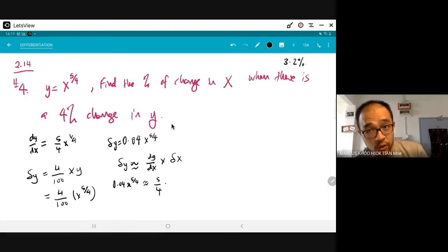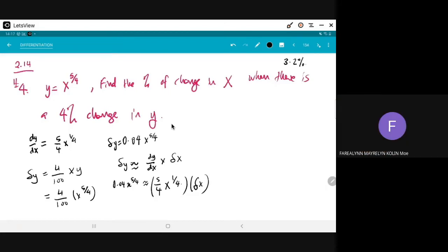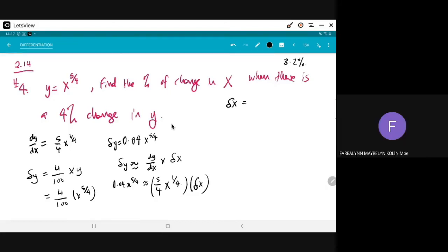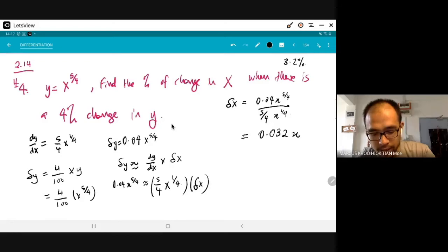Yeah. And then, use the formula del y approximately equals dy over dx times delta x. Okay. So, substitute the value and then get delta x. Okay. And then? And then, rearrange. The 0.04 x to the power of 5 over 4 over 5 over 4, x to the power of 1 over 4. Okay. Yeah. And then, get 0.032 x. Okay. So, 0.04 divided by 5 over 4 is 0.032. X to the power of 5 over 4 divided by x to the power of 1 over 4 is x.